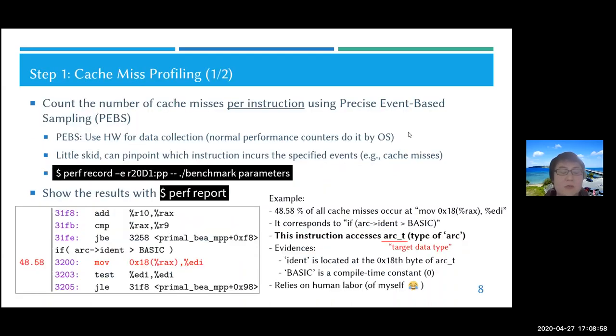In the first step, we count the number of cache misses per instruction using a functionality called PEBS, because we first observe the instructions that encourage many cache misses. PEBS is an enhancement of performance counters that uses hardware to collect data. Because it uses hardware, the skid between when an event occurs and when it's recorded is very little, so we can pinpoint which instruction encourages cache misses, while in normal performance counters you can't do it.